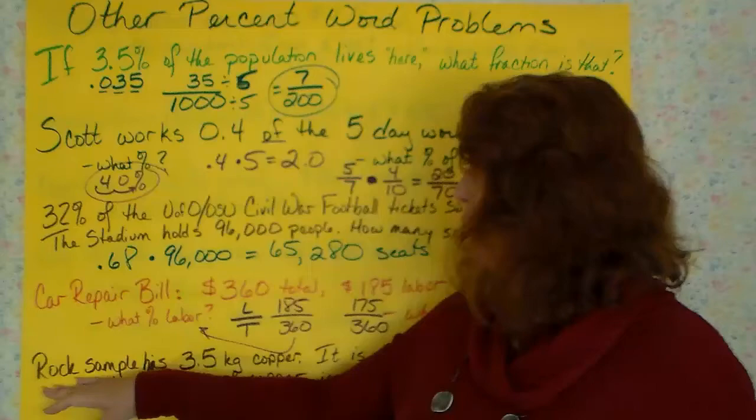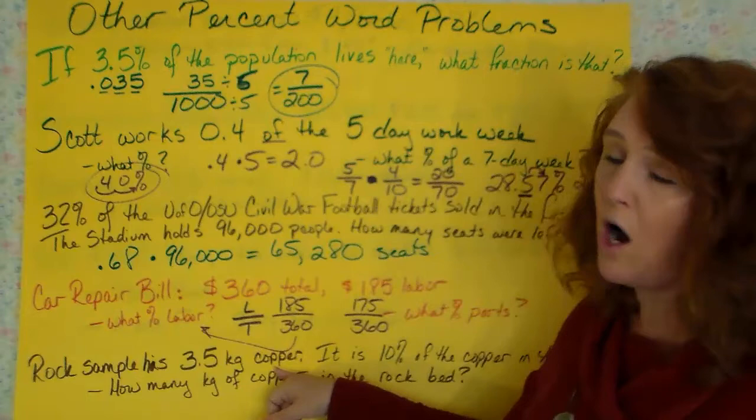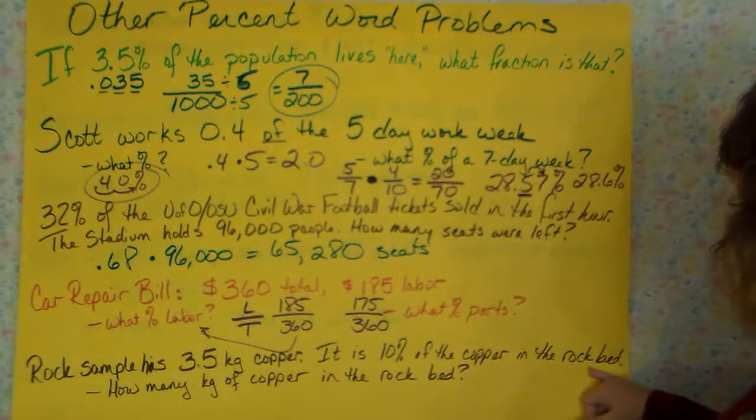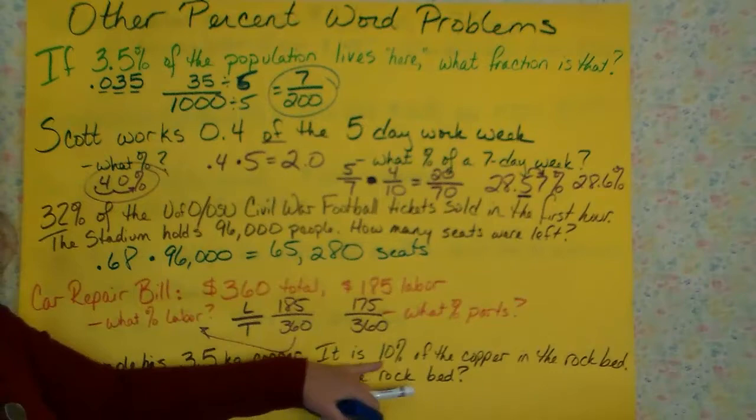Another type of question: there was a rock sample, we have this big rock bed, and we took a rock sample from this rock bed, and in this rock sample it had 3.5 kilograms of copper in it. Well, we know that this copper is 10% of the copper in the whole rock bed. Now, I need you to see how to translate that to math. 3.5 kilograms is 10% of the copper in the rock bed.